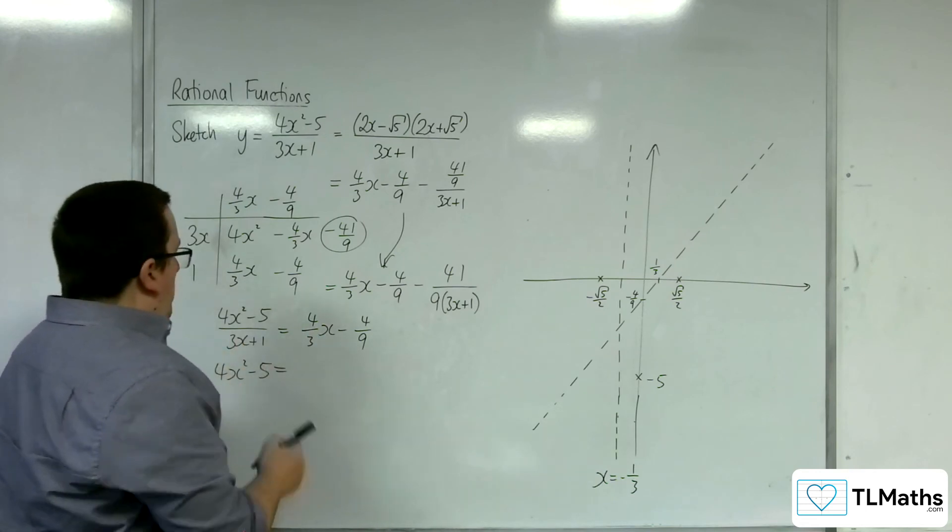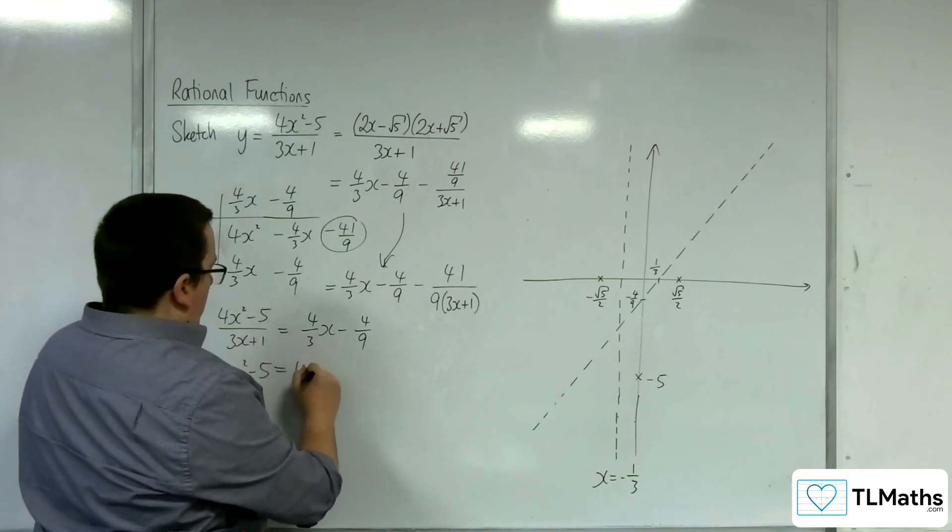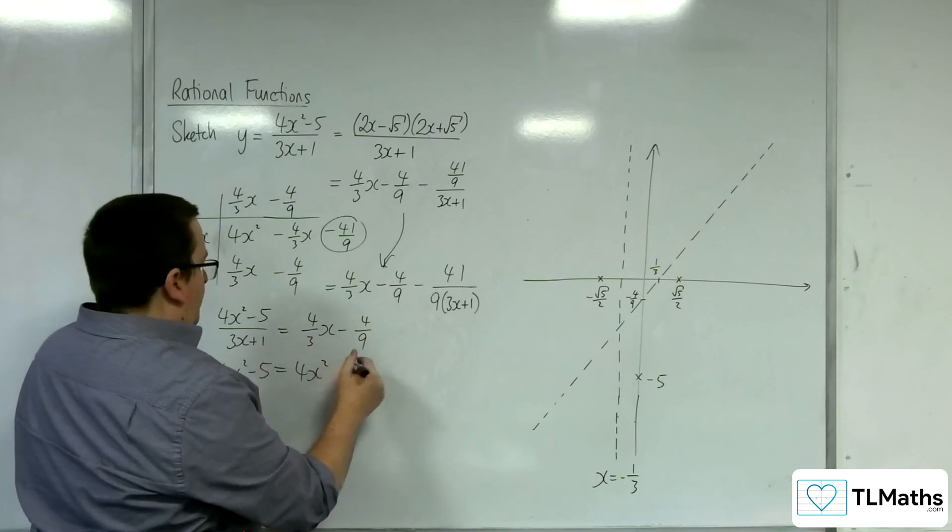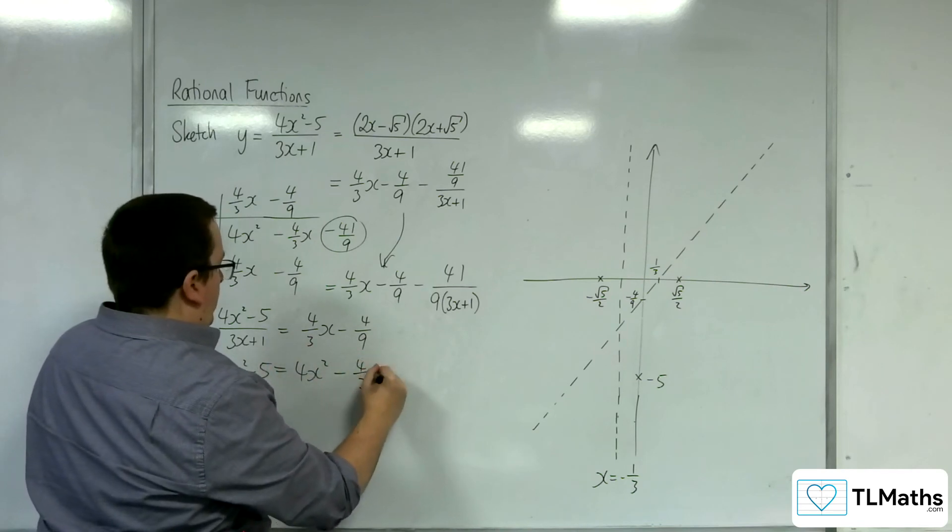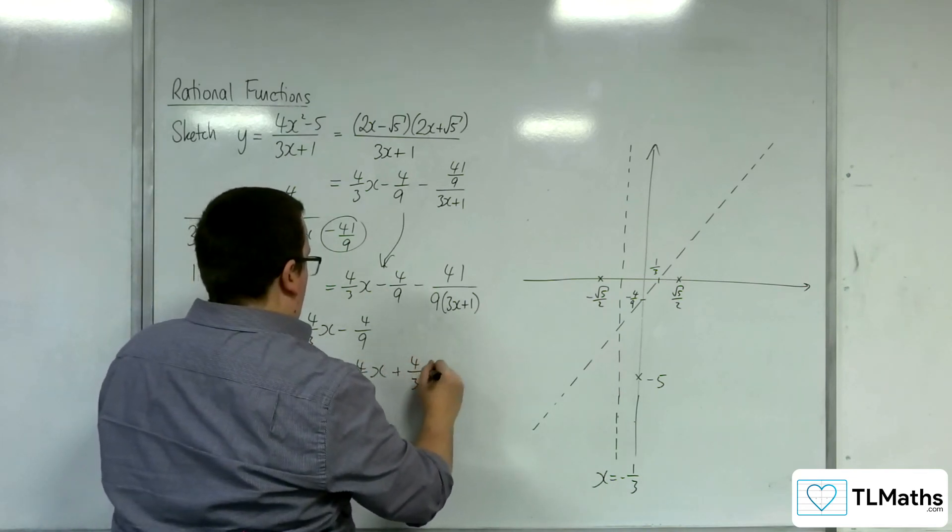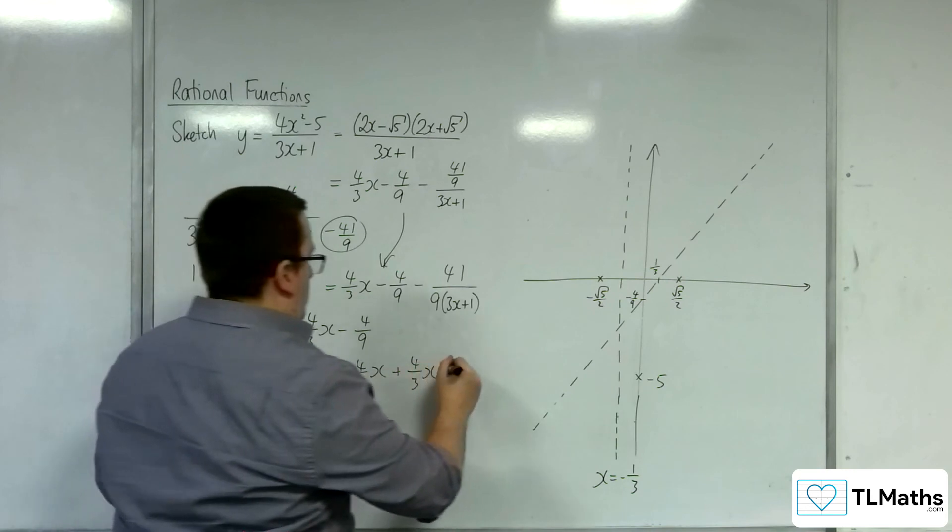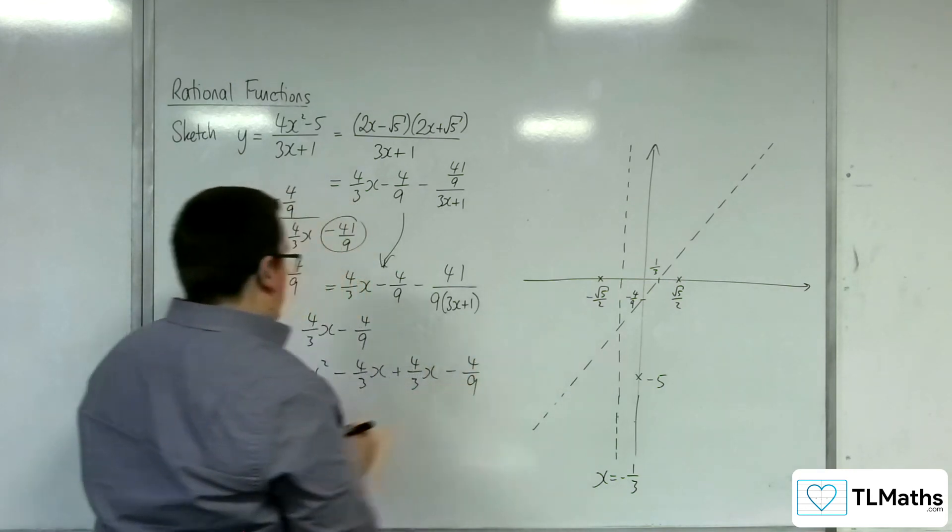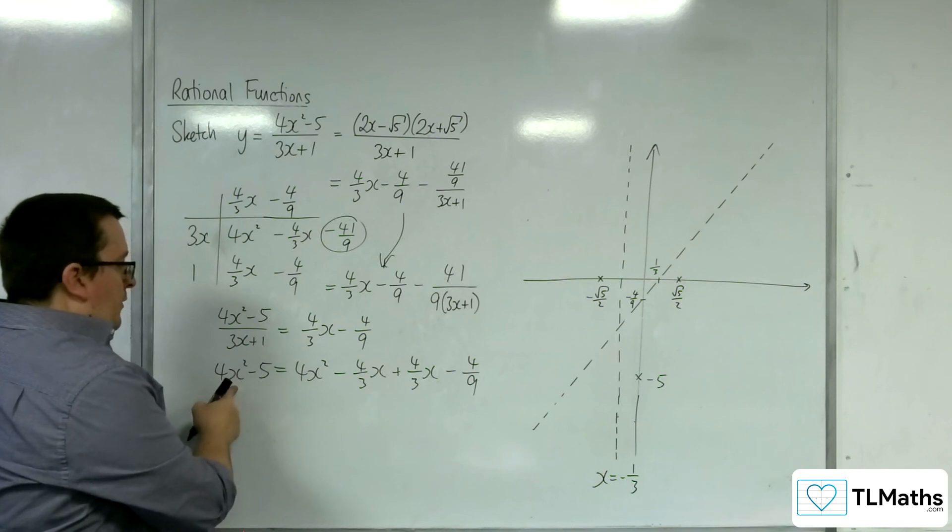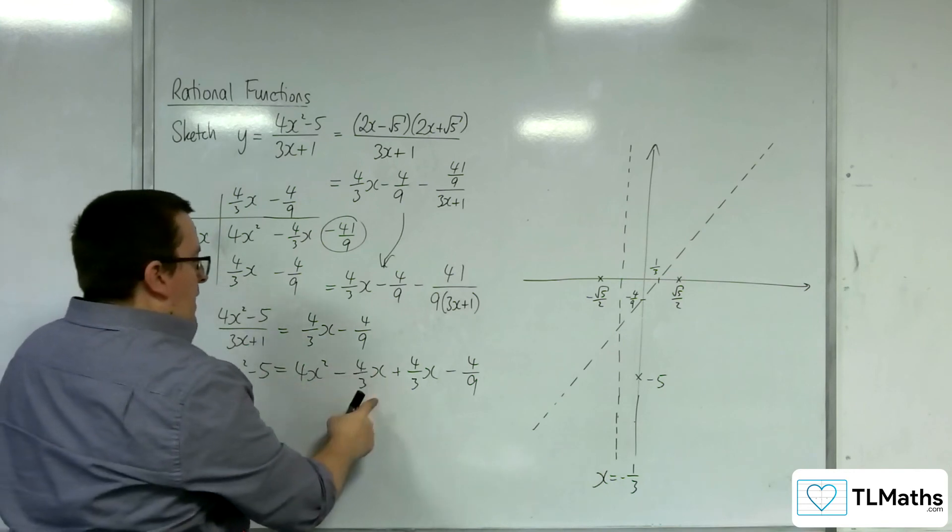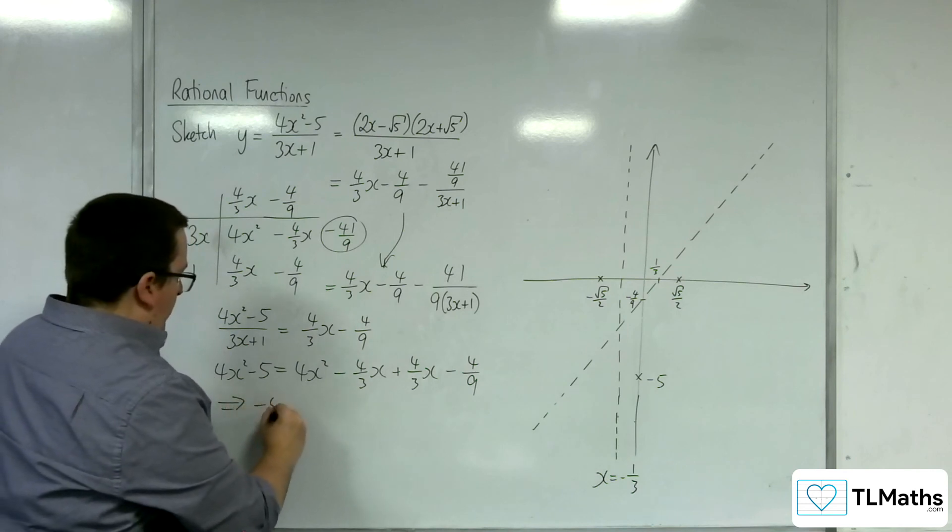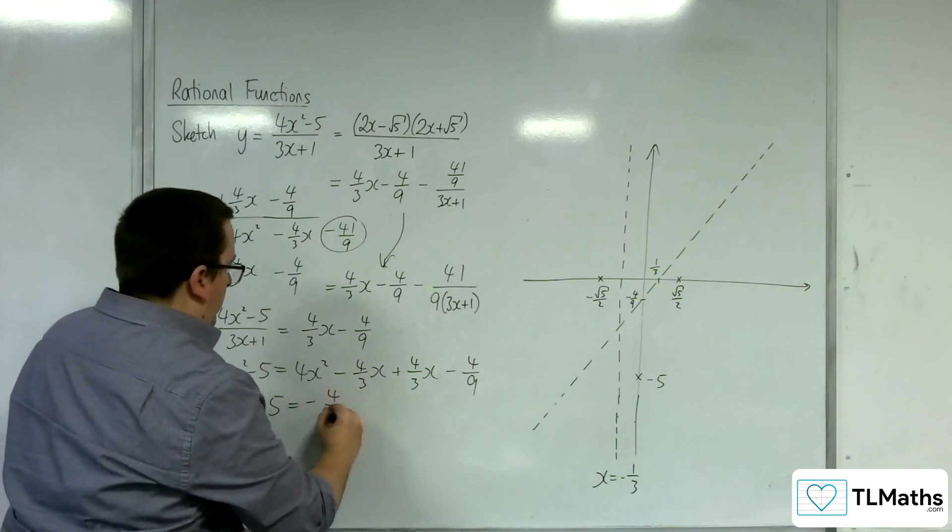So multiplying up by the 3x plus 1, we're going to get 4x squared. And then take away 4 thirds x, then 1 times that is plus 4 thirds x. And then take away 4 ninths. And then take away 4 ninths.